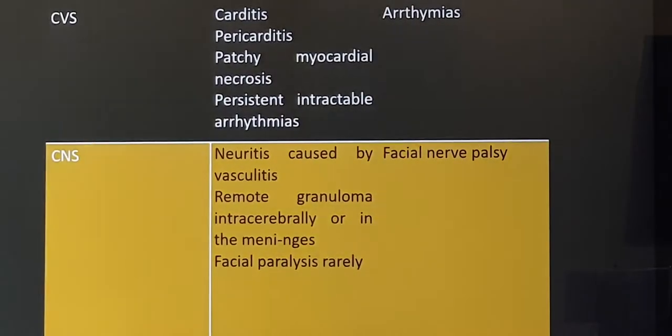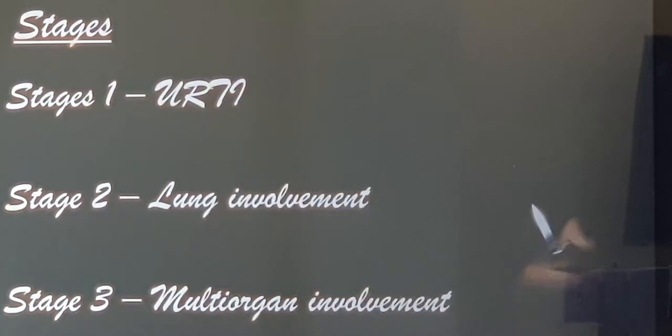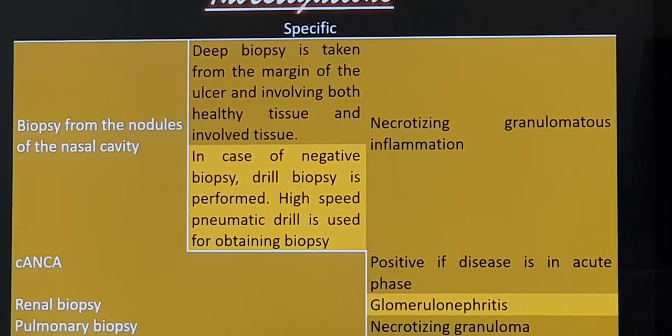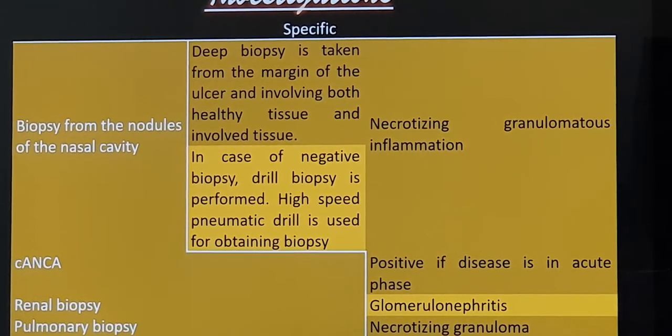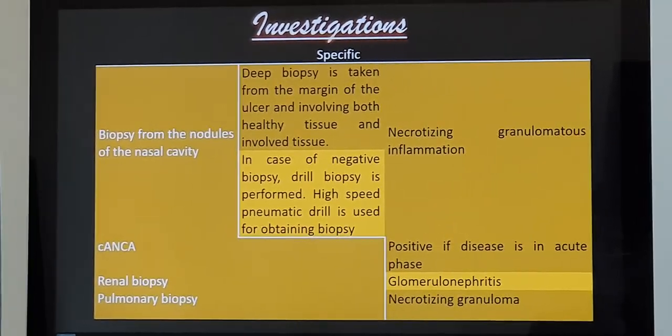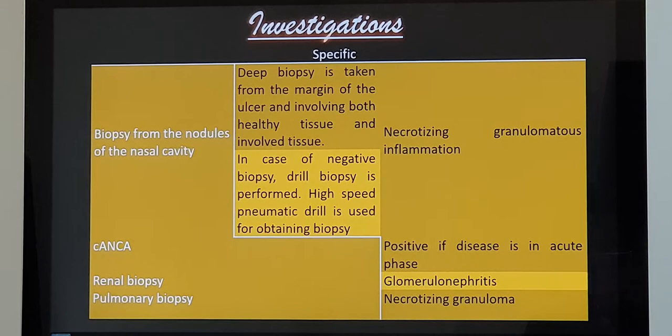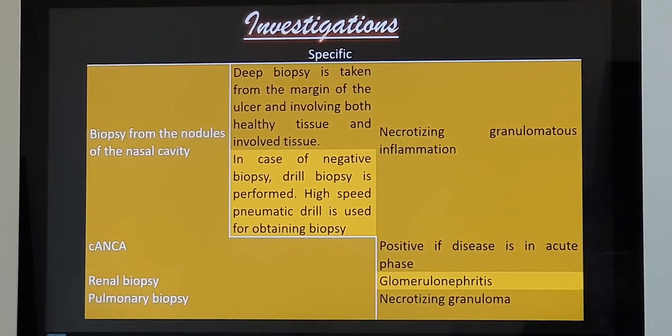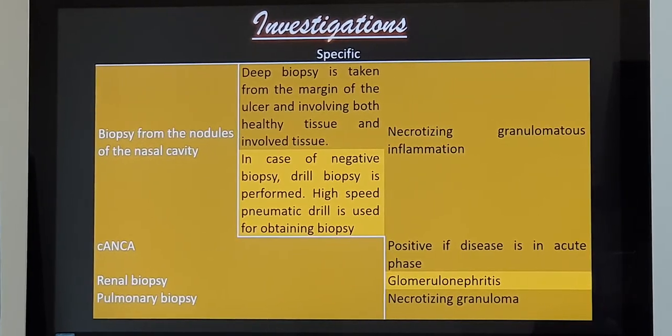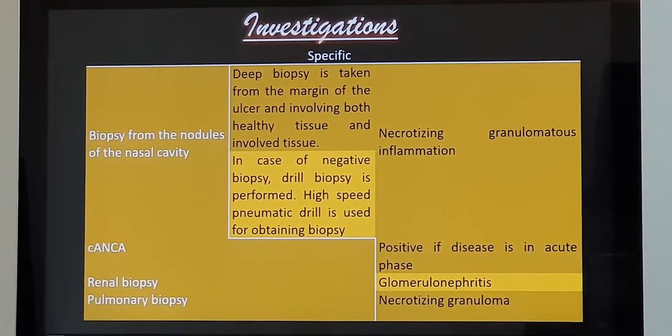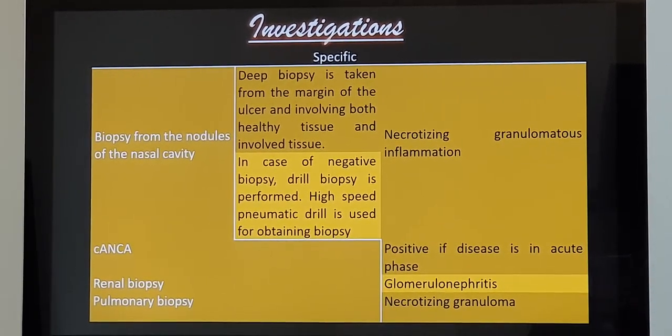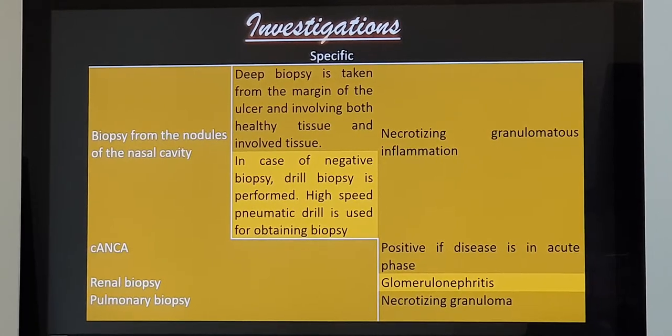Now coming to investigation, the main investigations are one is biopsy, the second one being anti-nuclear cytoplasmic antibody. The biopsy has to be a deep biopsy from the margin and from the healthy tissue. And in case the biopsy becomes negative we have to do a drill biopsy also. See what happens is by the time we have a diagnosis of Wegener's granuloma, it is almost a year or so. That's what statistics say. Because the biopsy, the repeated biopsy all comes negative, that's why.